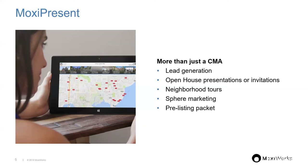Sphere marketing is another great use — connecting with your entire database. You can craft a market snapshot or an update on a house anniversary — one year or ten years since someone bought their home — and create a market report through Present that you can email out. You can also create a pre-listing packet to show why clients should use you, including market share slides showing how much of the market Benchmark has.